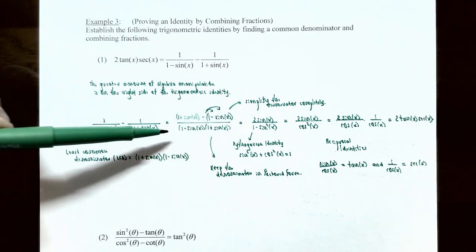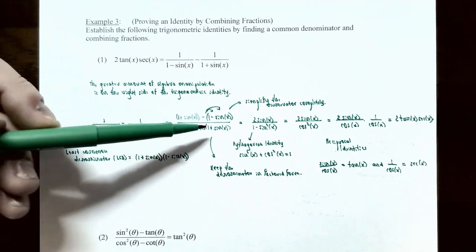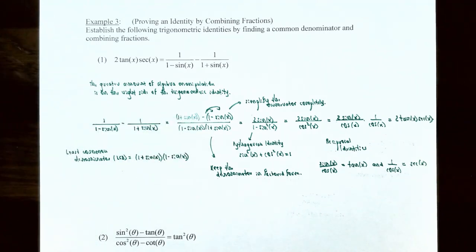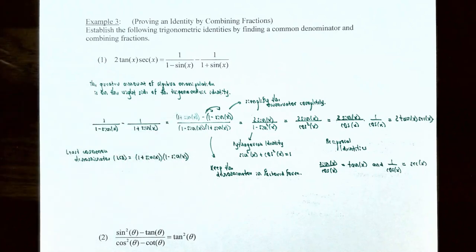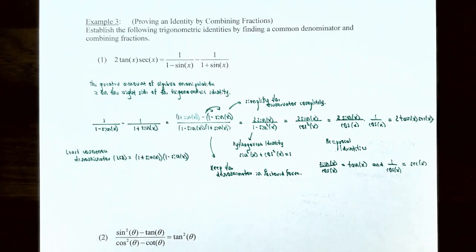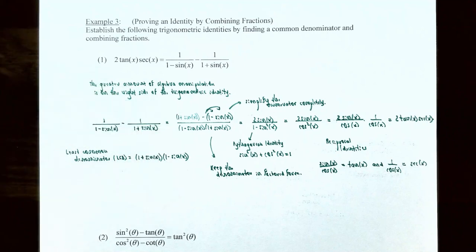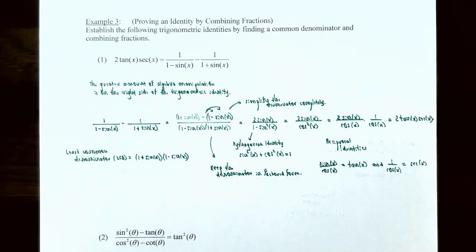In the denominator, multiplying using the FOIL method gives: 1·1 = 1, 1·sin x = sin x, −sin x·1 = −sin x, and −sin x·sin x = −sin²x. The middle two terms, −sin x + sin x, cancel out to 0, leaving 1 − sin²x in the denominator.